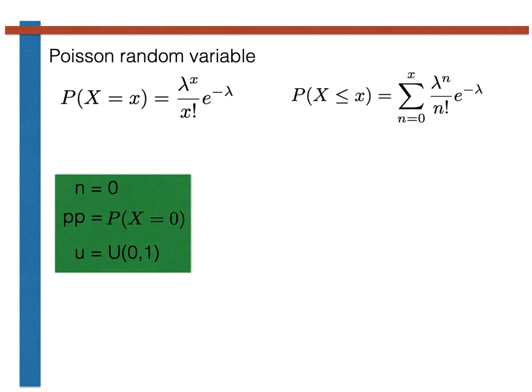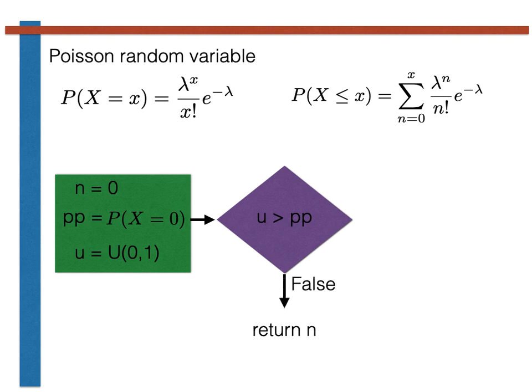We now check if the uniform random variable u that we generated is greater than pp or not. If u is less than or equal to pp, then we are in the first segment of the diagram that we drew on the previous slide. The Poisson random variable is thus 0 and we can just return the value of n.